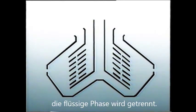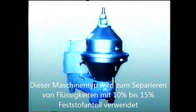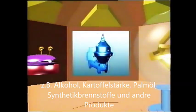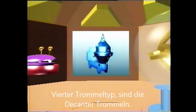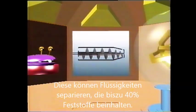This type of separator is used for suspensions that contain larger quantities of solids — between 10% and 25% — like yeast, alcohols, starch, palm oil, or synthetic fuels. A fourth type of separator, known as a decanter centrifuge, can handle liquids containing as much as 40% solids.